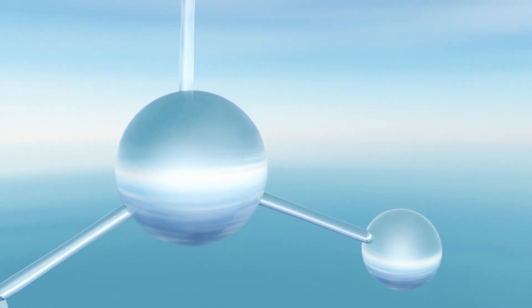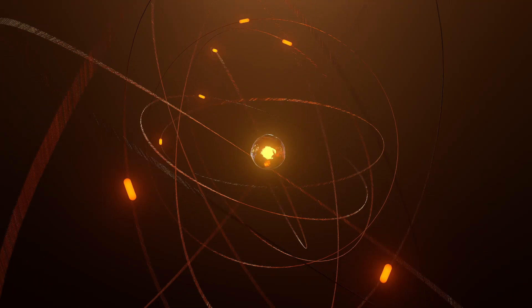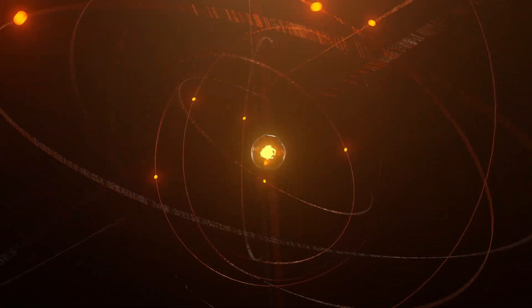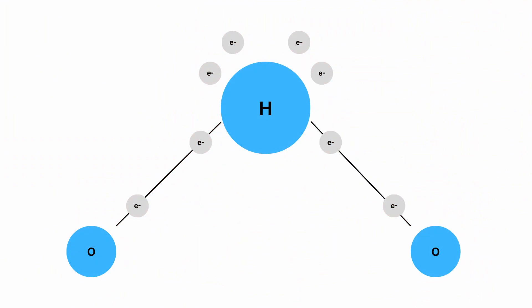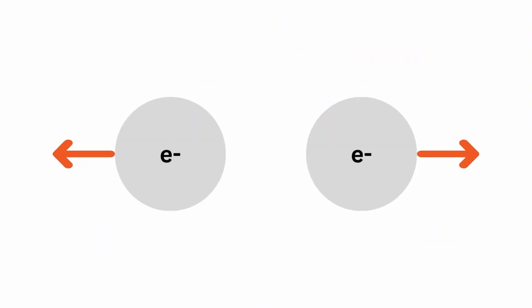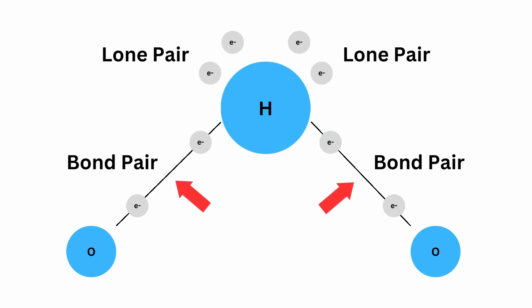Covalent compounds, on the other hand, are much stranger — they form various geometries and structures when bonded. Covalent bonds are the force of attraction between nuclei and the pair of electrons they share. To understand the shapes these compounds form, we first need to understand electron sharing. There are two types of electron pairs in a covalent bond: bond pairs and lone pairs. Electrons, being the same charge, tend to repel each other.